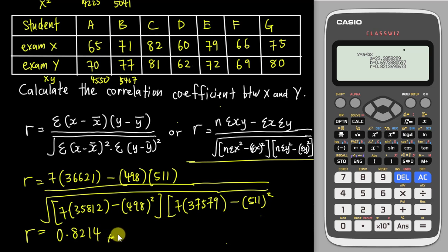The regression calculation also gives you values A and B. In the linear equation Y equals A plus BX, B is the gradient of the line and A is the vertical intercept, also called the Y-intercept. Here I will not go too deep about the meaning of A and B — I just want to show you the R value.